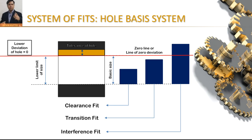The hole basis system is popular because it is more convenient to make correct sizes of holes using standard drills, reamers, or broaches. On the other hand, we can vary shaft size very easily by turning and grinding operations. That's why the hole basis system is very popular, but based on requirements we can also choose the shaft basis system.